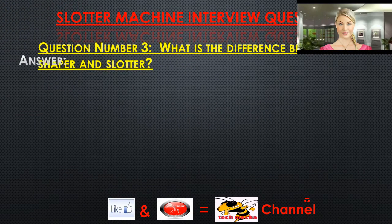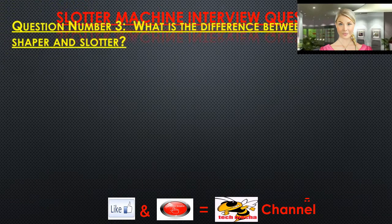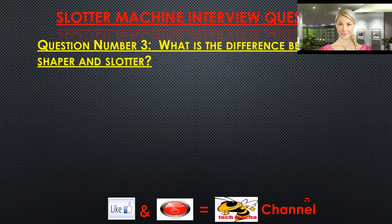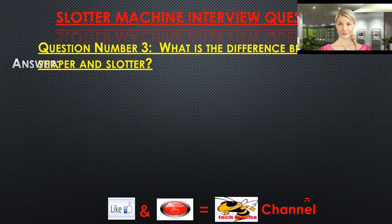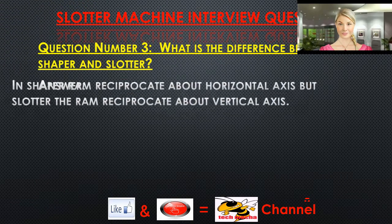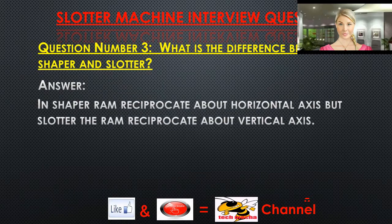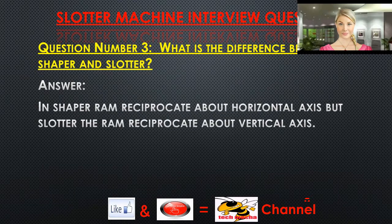Question number three: What is the difference between a shaper and a slotter? Answer: In a shaper, the ram reciprocates about a horizontal axis, but in a slotter, the ram reciprocates about a vertical axis.